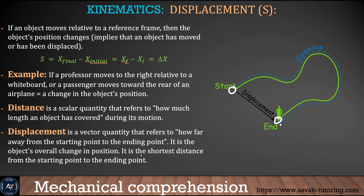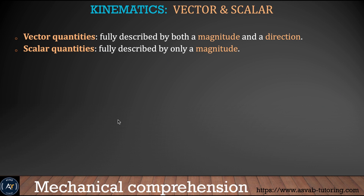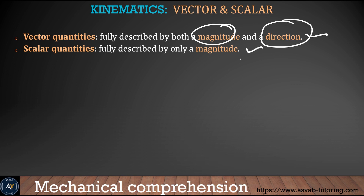There are two things you need to know to make your idea clear: vector quantity and scalar quantity. A vector quantity is a quantity that has magnitude and also a direction. For the scalar quantity, it has only magnitude — it doesn't have any direction.